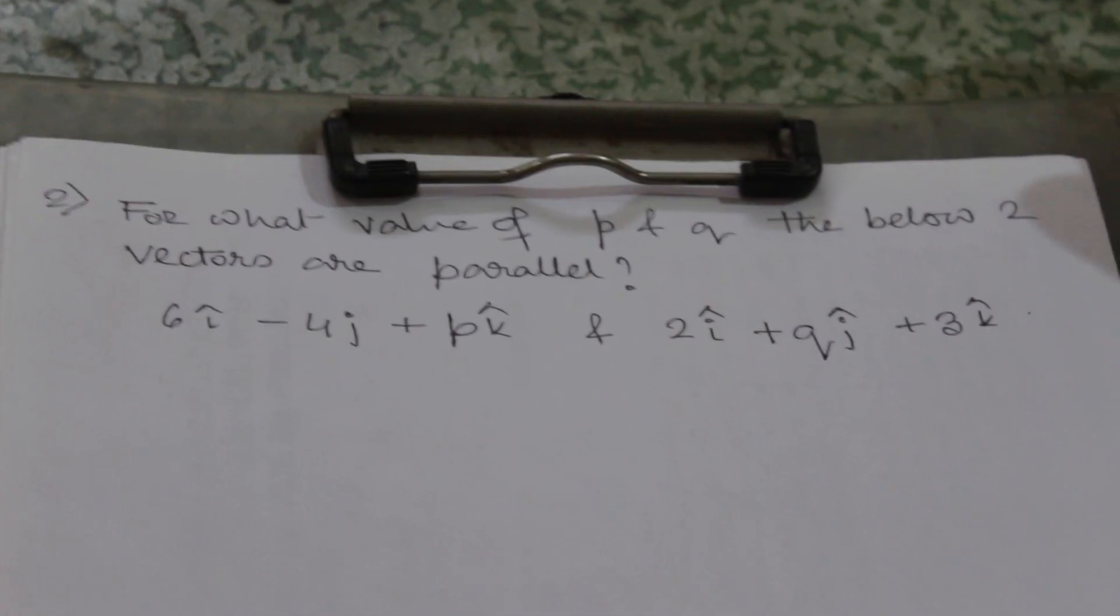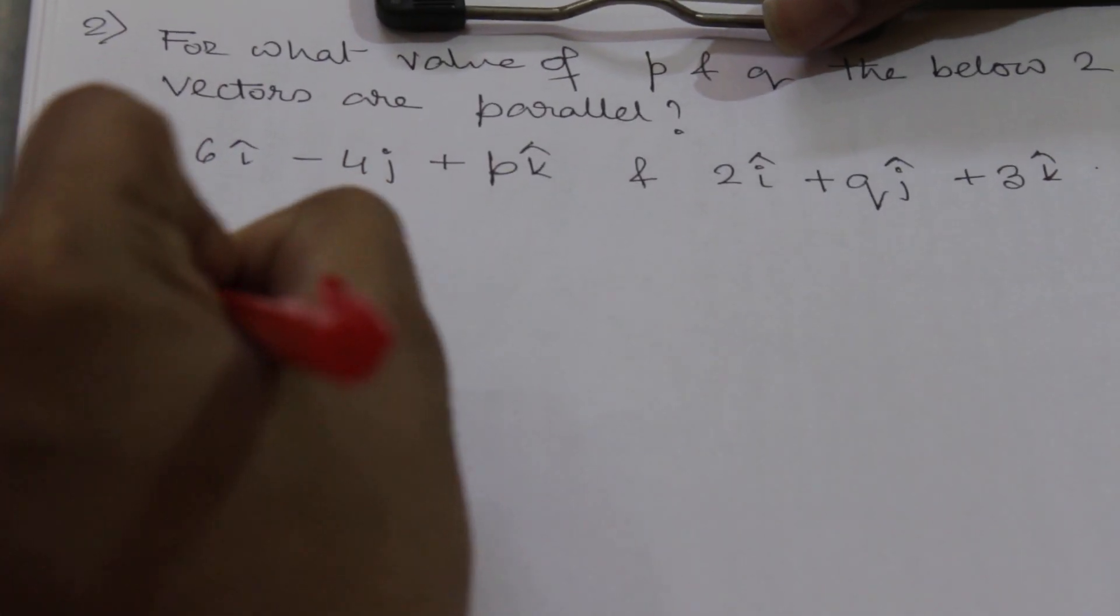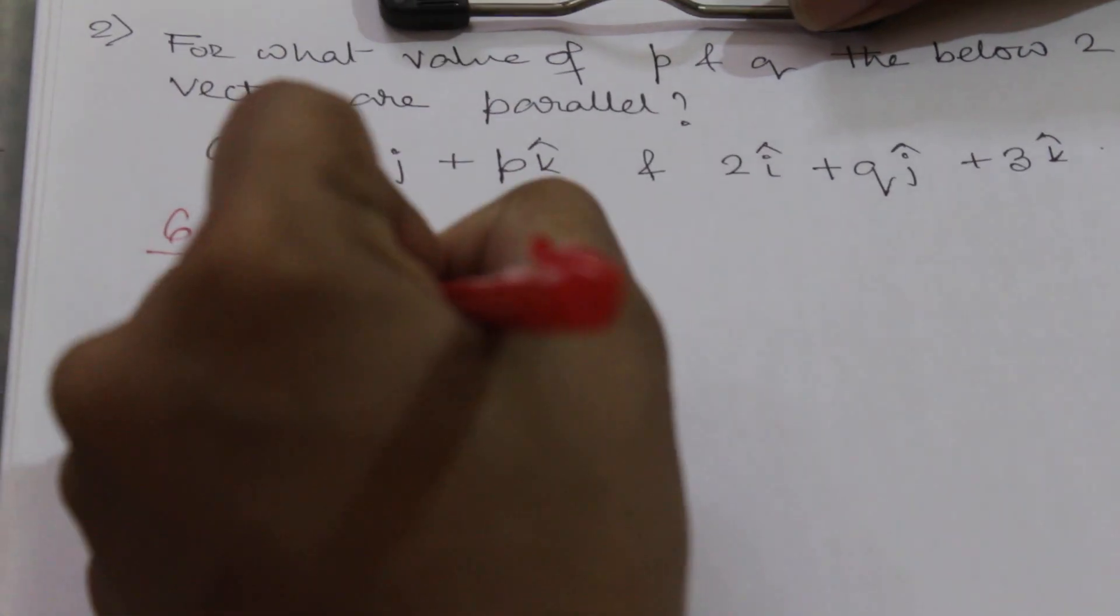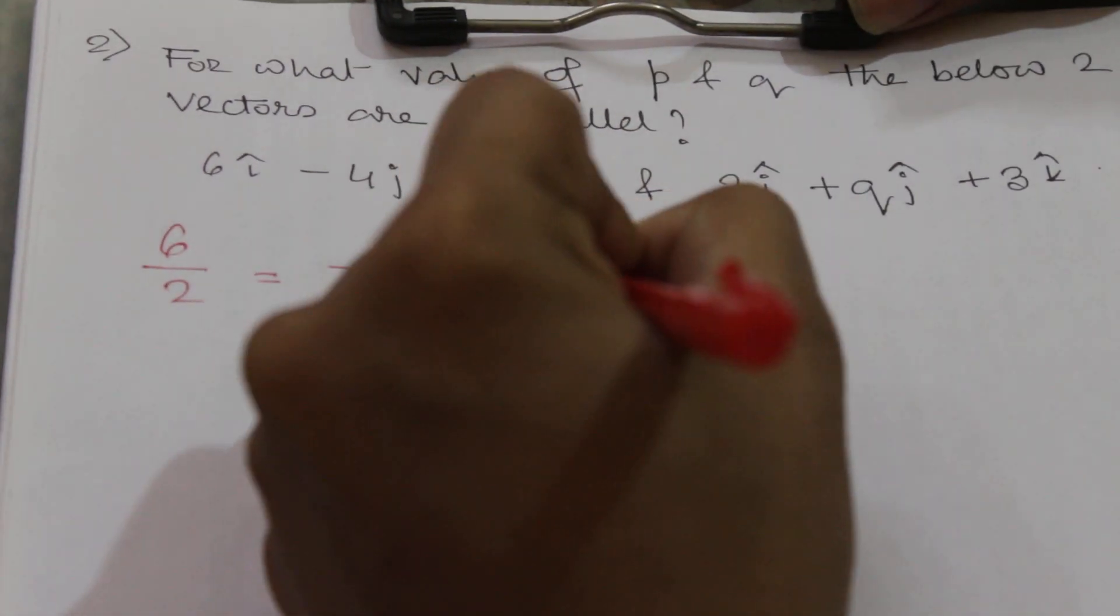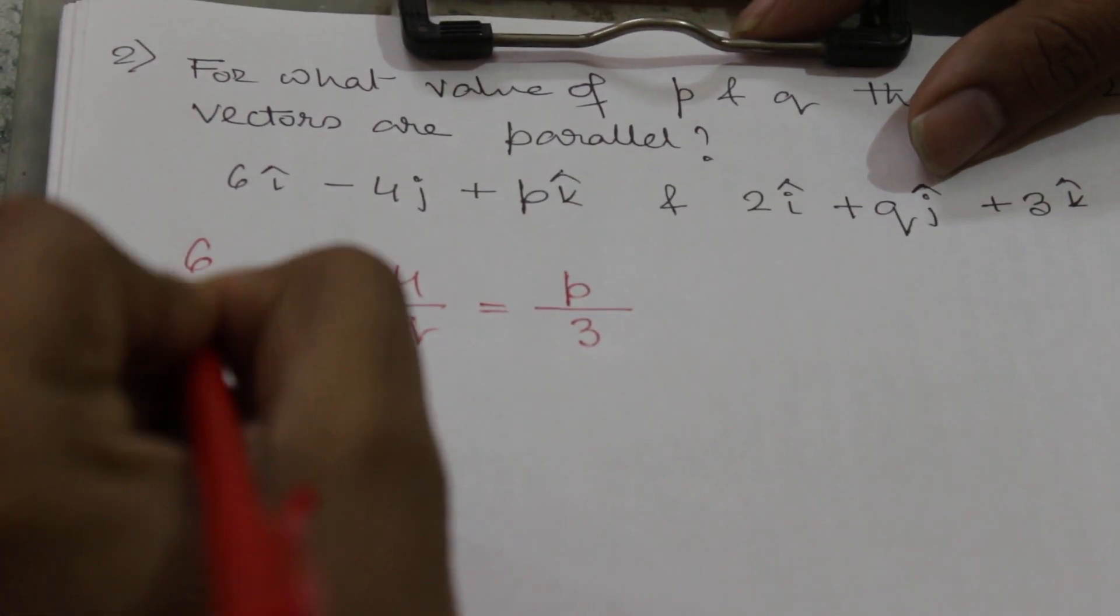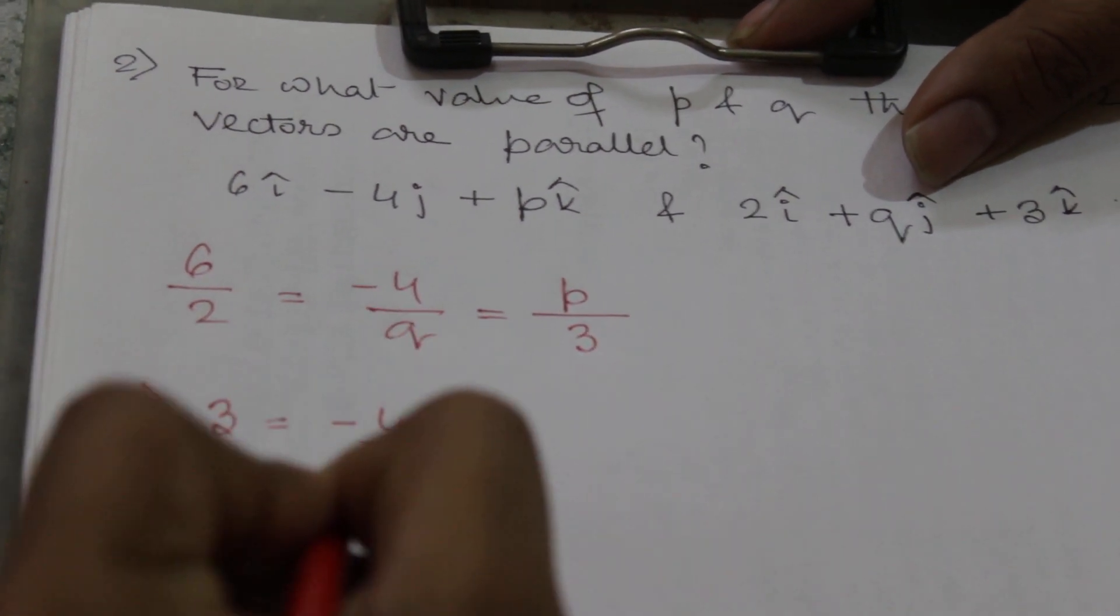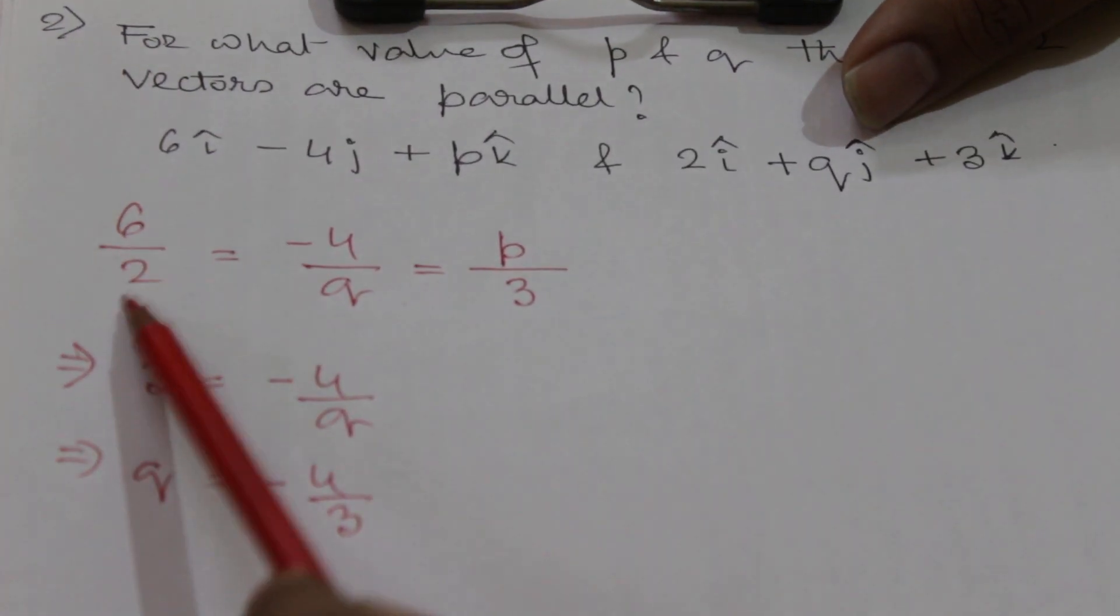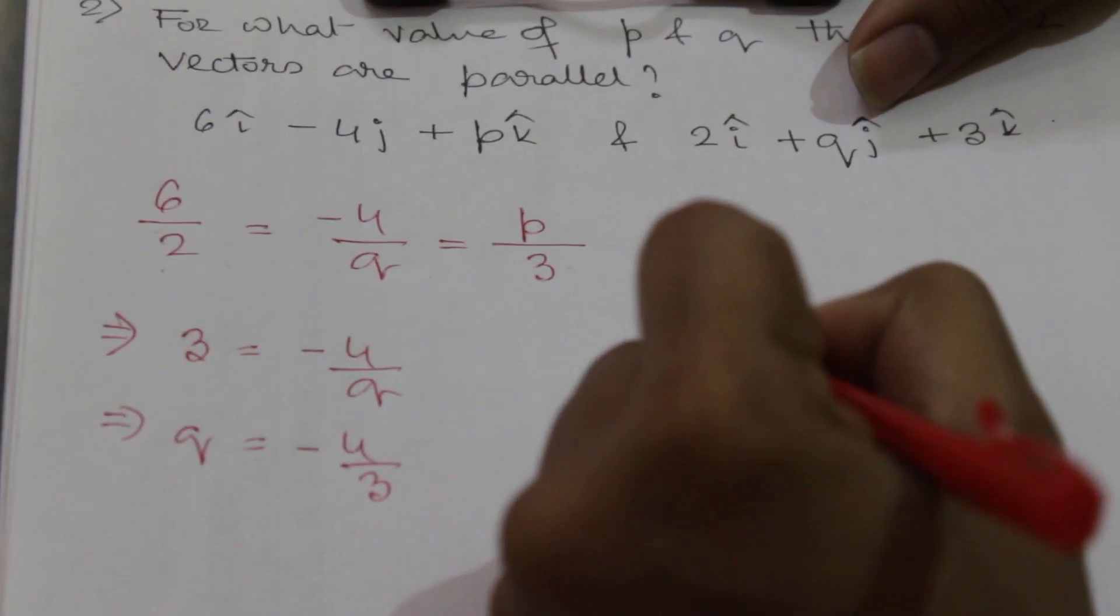Parallel means their cross product will be zero, so 6 by 2 will be equal to minus 4 by q, and also equal to p by 3. So first we will solve these two: 6 by 2 is 3, so 3 equals minus 4 by q, so q equals minus 4 by 3. Next we will solve 6 by 2 equals p by 3, that is 6 by 2 equals p by 3, so p will be equal to...